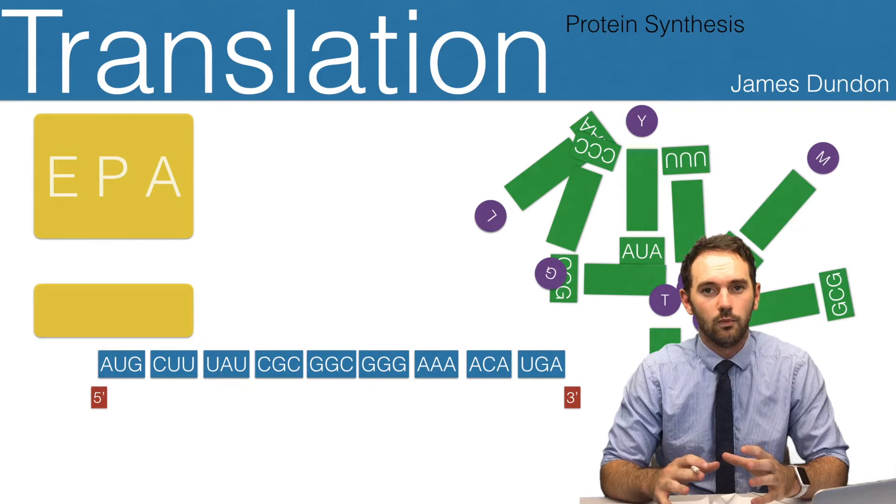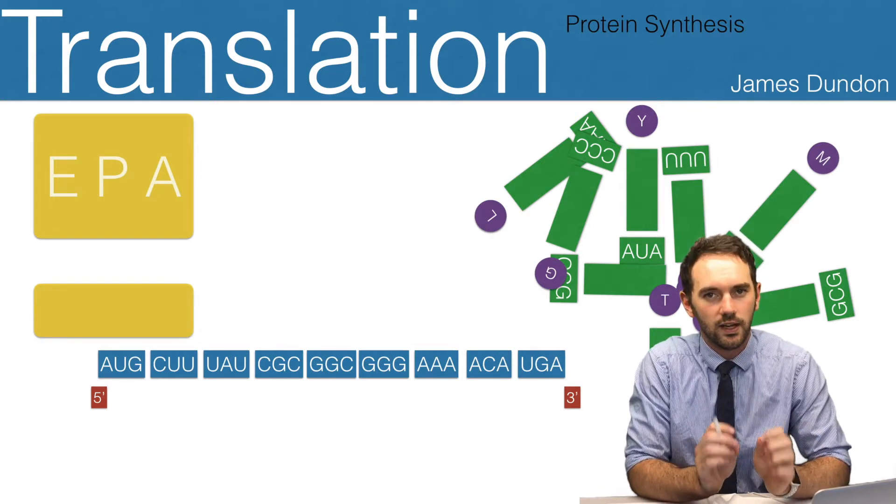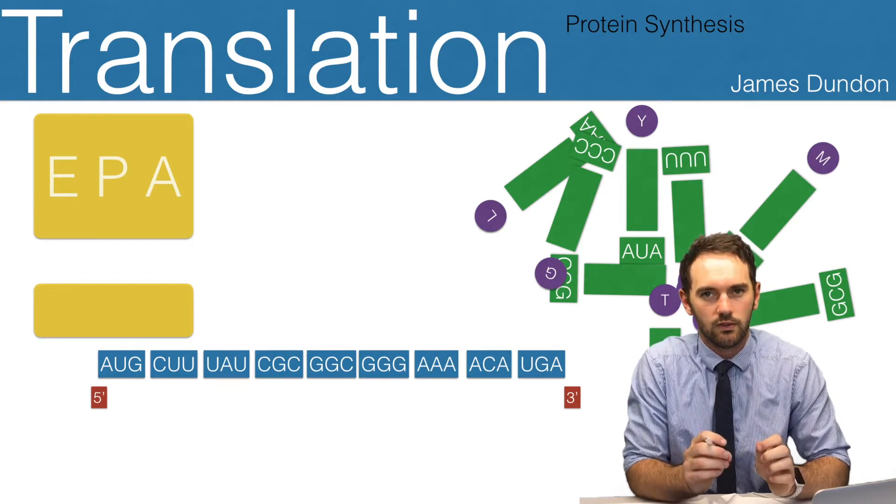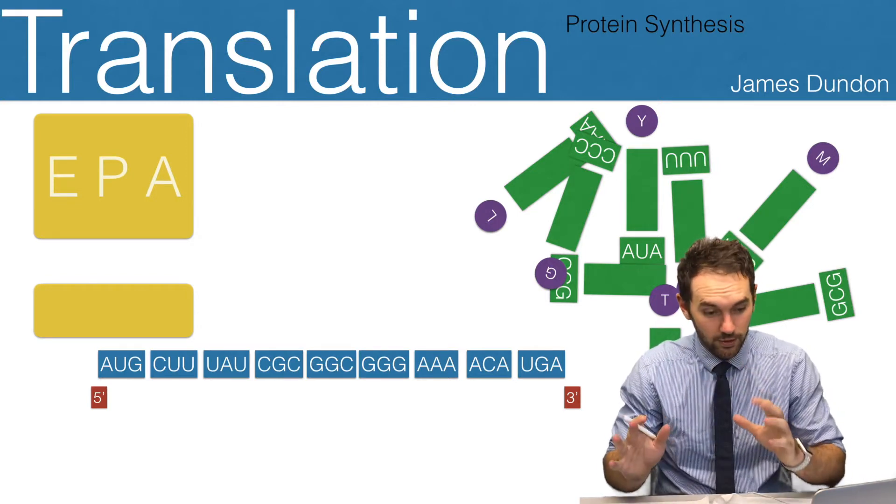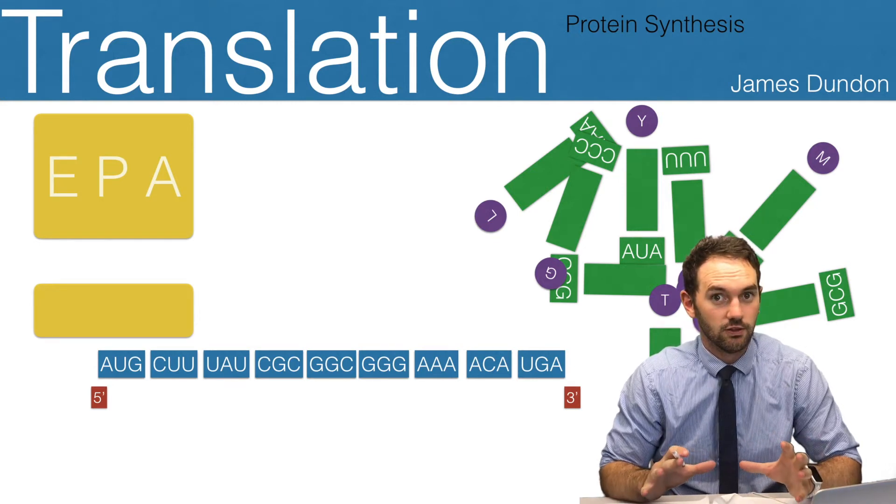We're taking genetic information in our DNA and transcribing that into a message, then translating that message into a sequence of amino acids which determine the structure and function of that protein. So now we're going to look at translation, that process of going from messenger RNA to the sequence of amino acids.